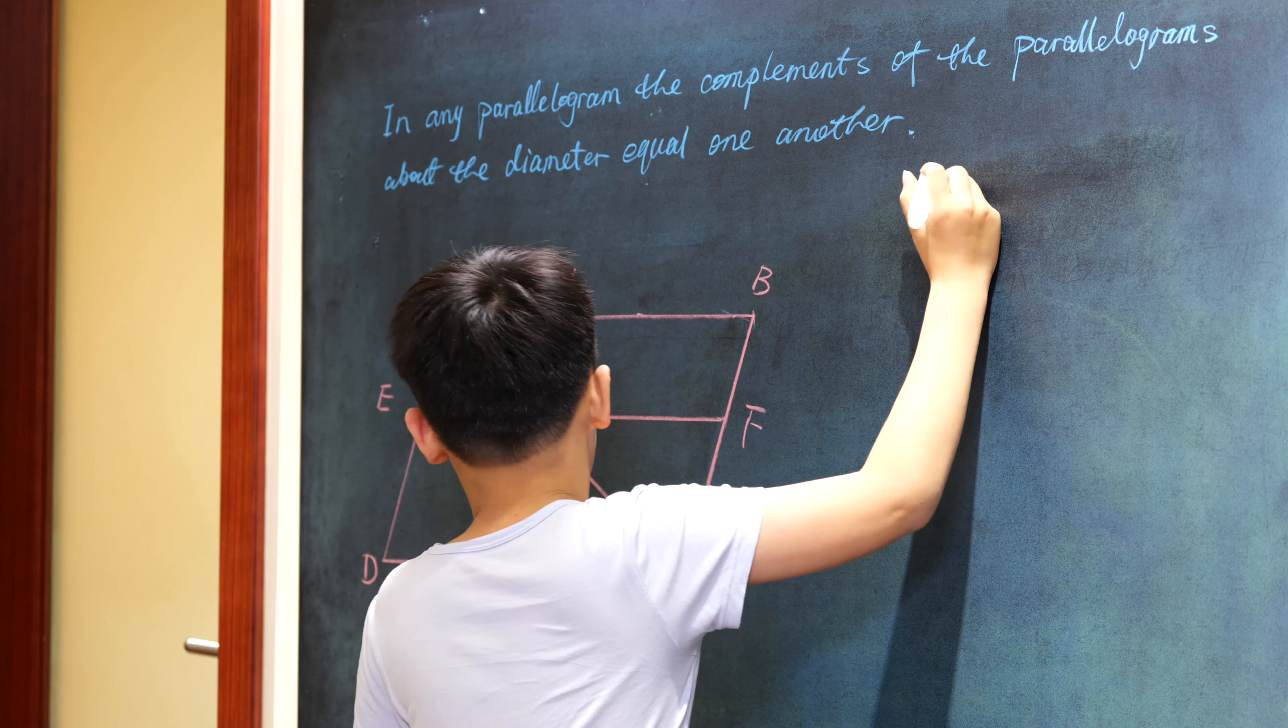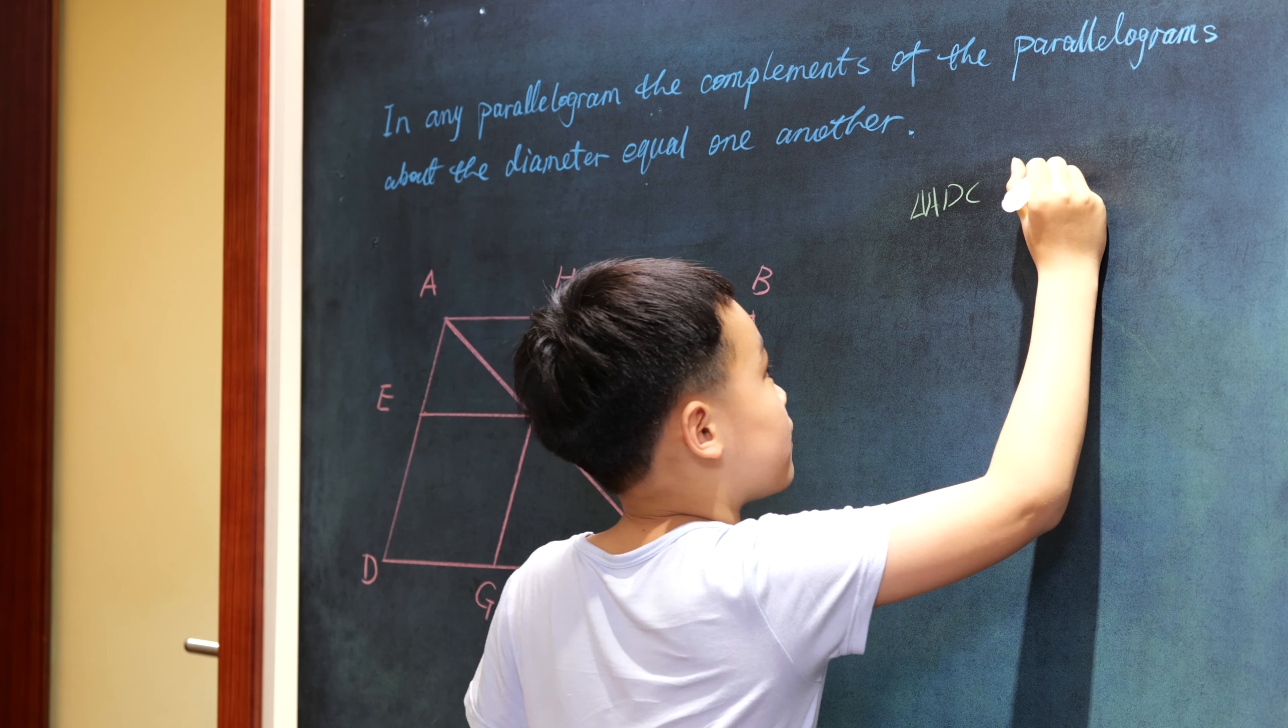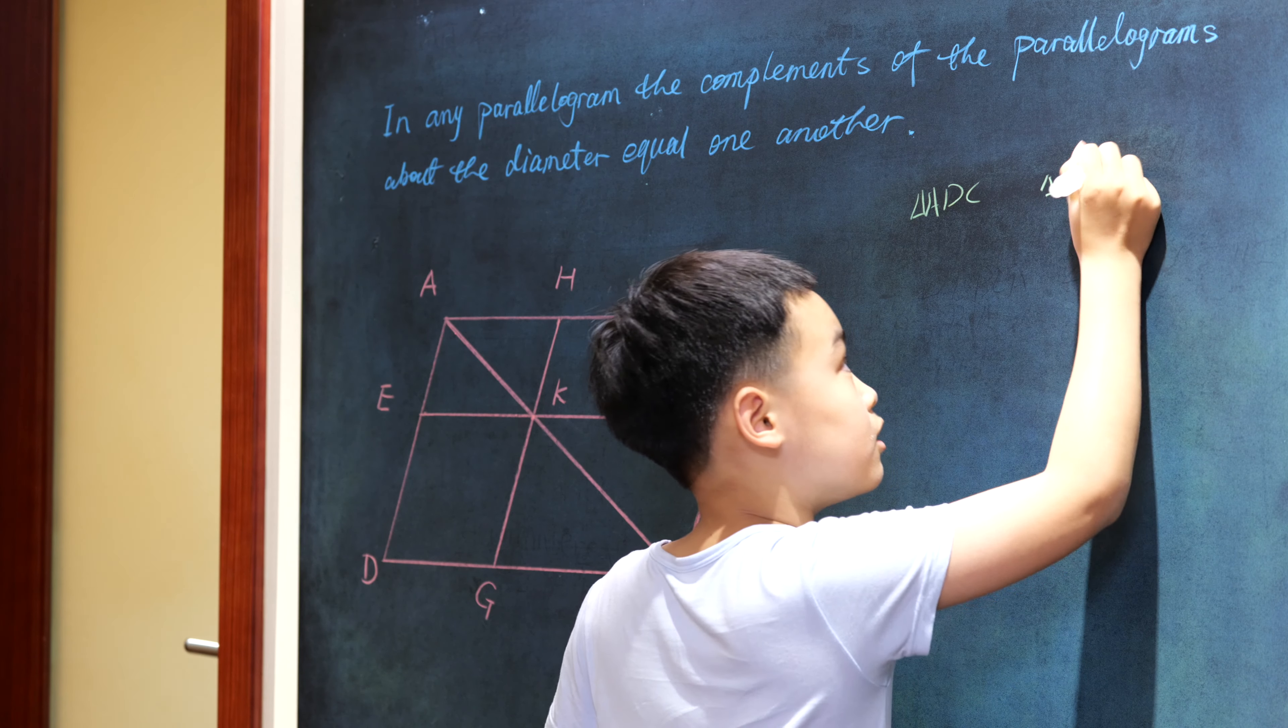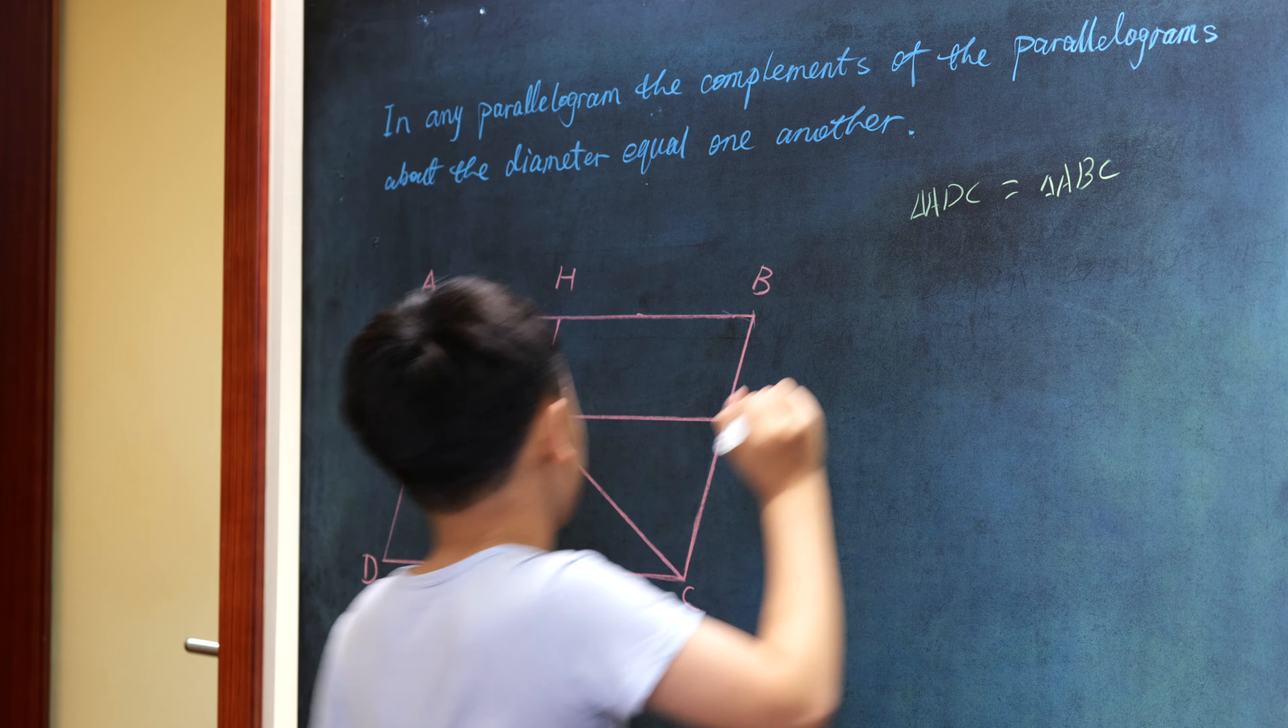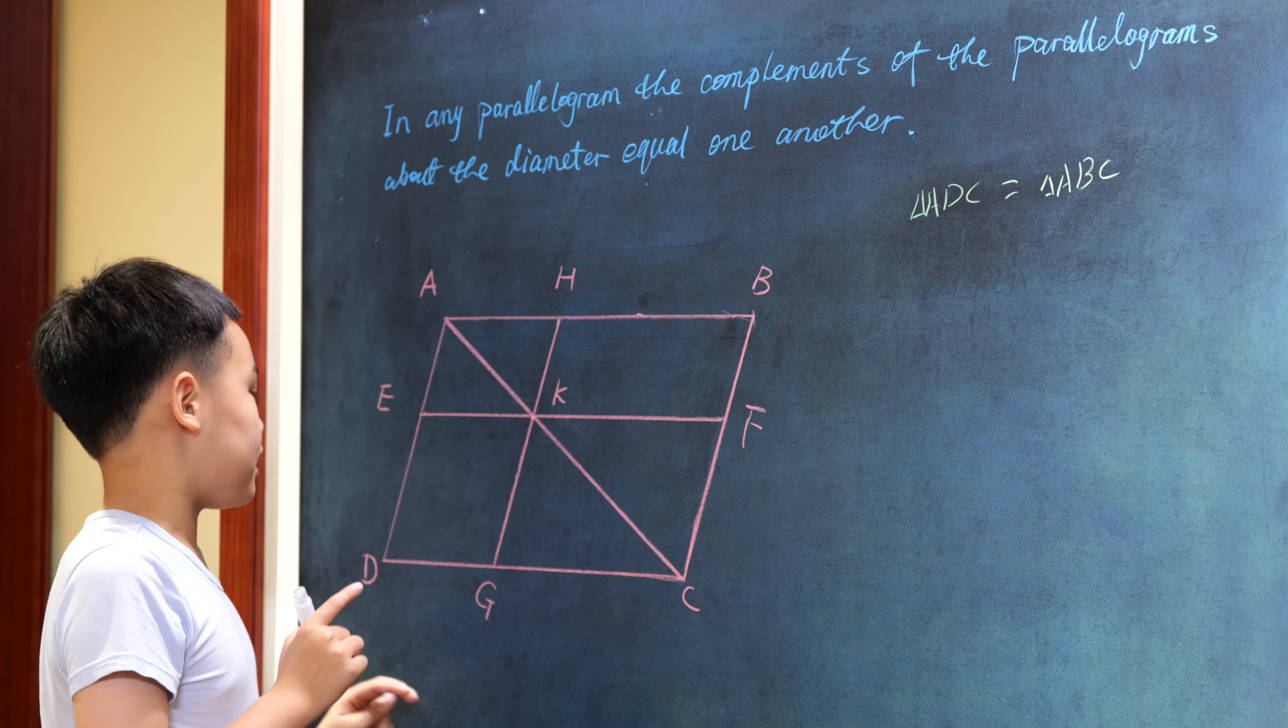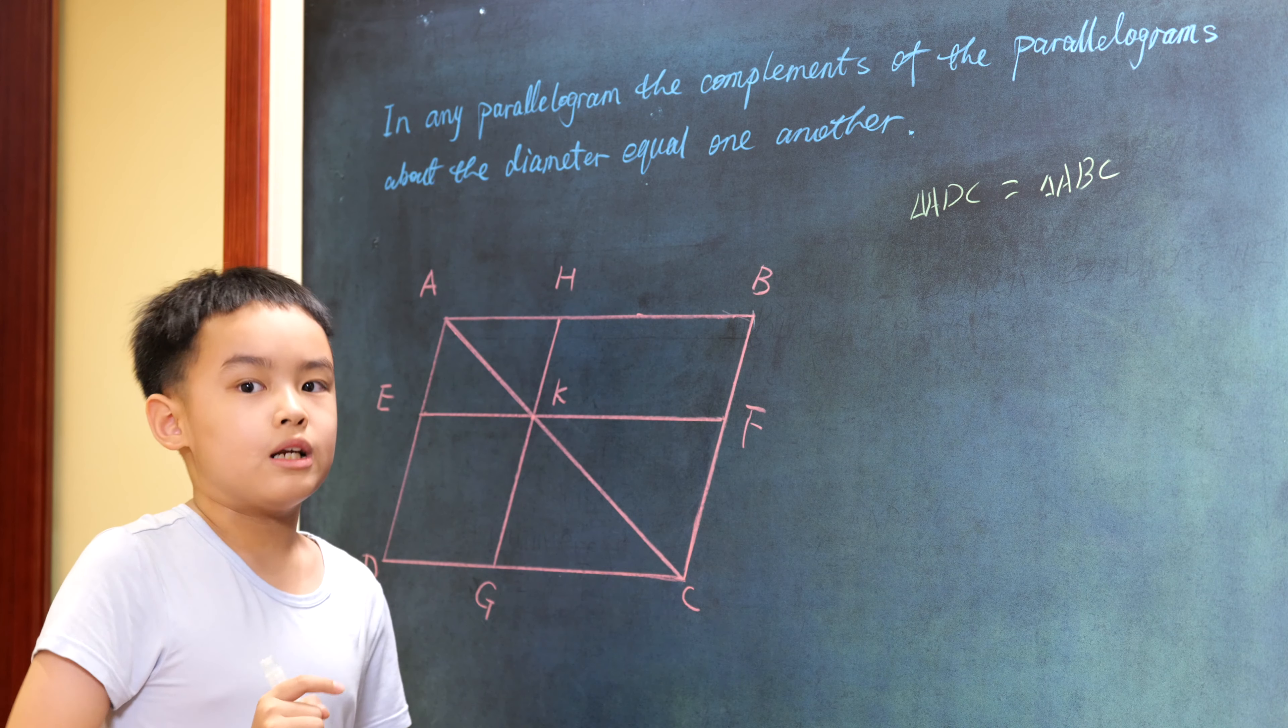Let's look at triangle ADC and triangle ABC. They're equal because line AC is a line inside the parallelogram ABCD, and it's a diameter.